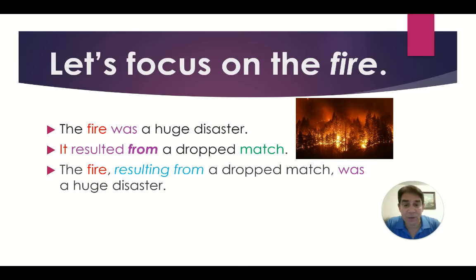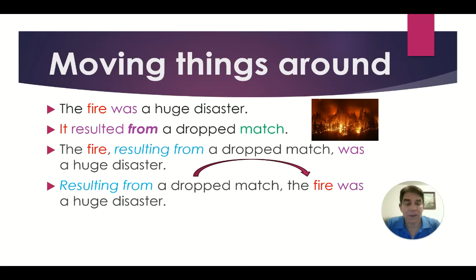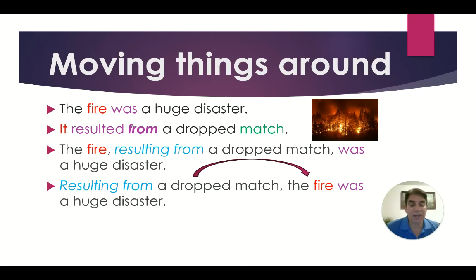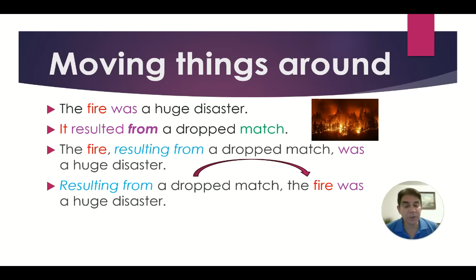Can you see how that works? Let's move things around a little bit. The fire resulting from a dropped match was a huge disaster. Now let's take that phrase in the middle and put it at the beginning: Resulting from a dropped match, the fire was a huge disaster. The main subject is 'fire,' the main verb is 'was,' and 'resulting from a dropped match' is just an introductory phrase.